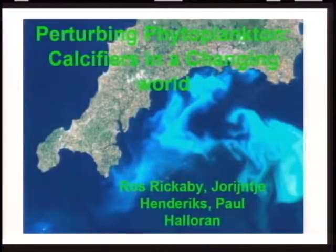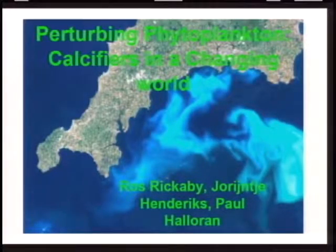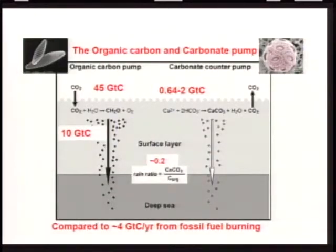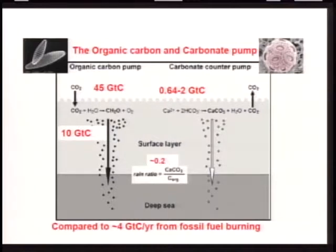Each of these cells is about a micron across, maybe a few microns, and yet they can have a global impact on the world. Here's a satellite picture of coccolithophores where the light is being reflected from the calcite lists that they produce, showing the scale of the blooms in the ocean. They're very important also in controlling the partitioning of carbon between the atmosphere and the ocean. The coccolithophores are the main primary producer that actually also creates calcium carbonate.